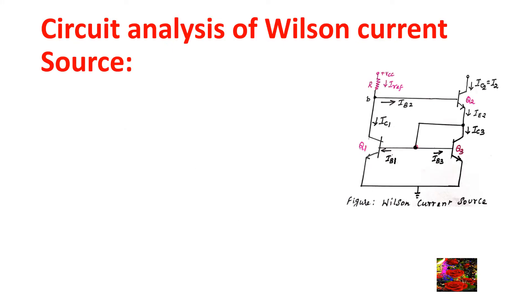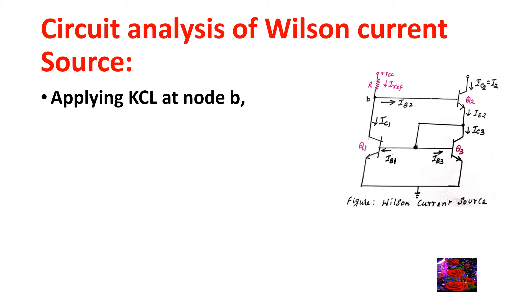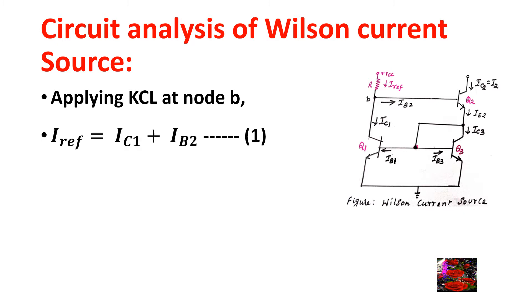Let us discuss the circuit analysis of Wilson current source. Applying KCL at node B: at node B, the incoming current is I_reference, and the outgoing currents are I_C1 and I_B2. So applying KCL at node B: I_reference = I_C1 + I_B2. Consider this as equation 1.